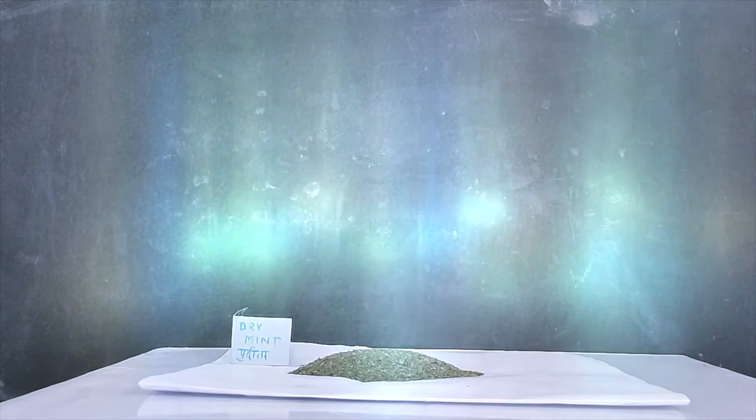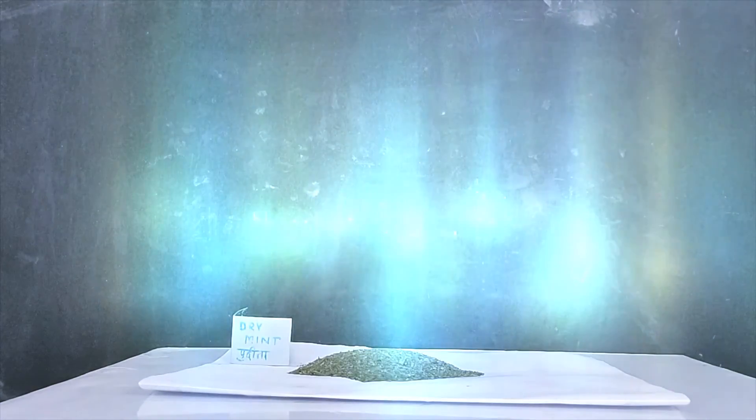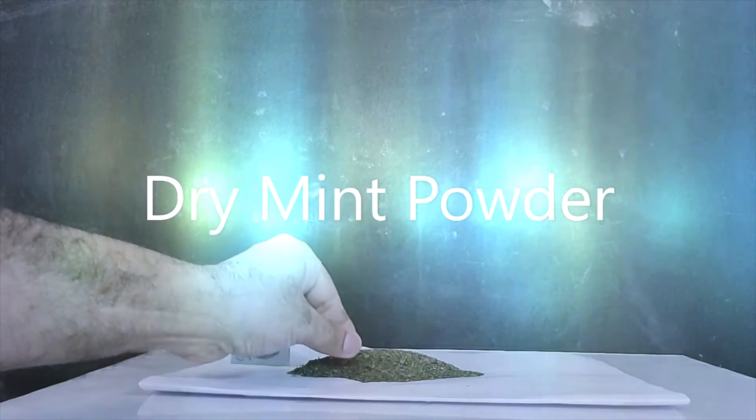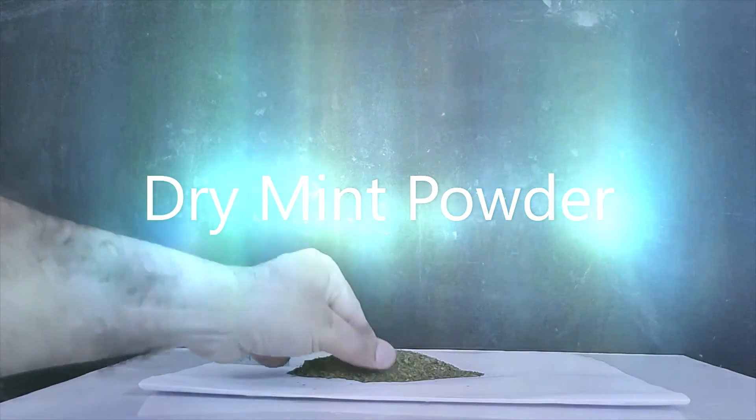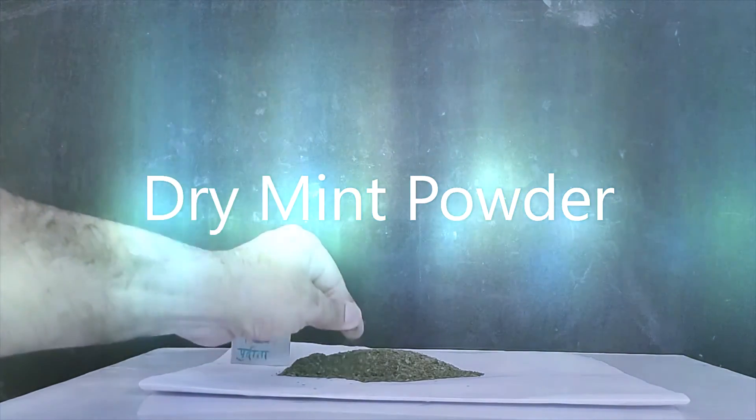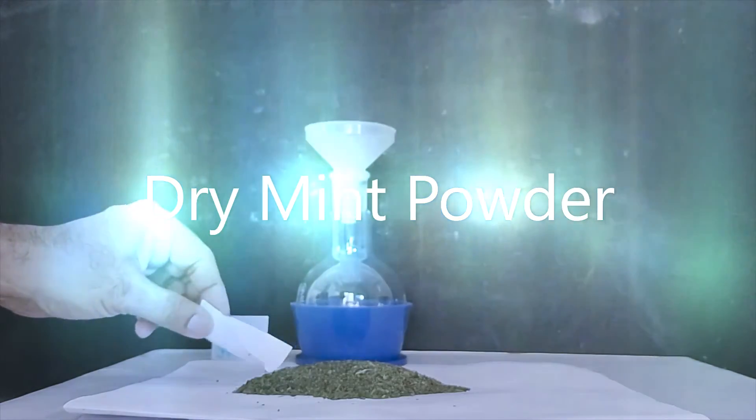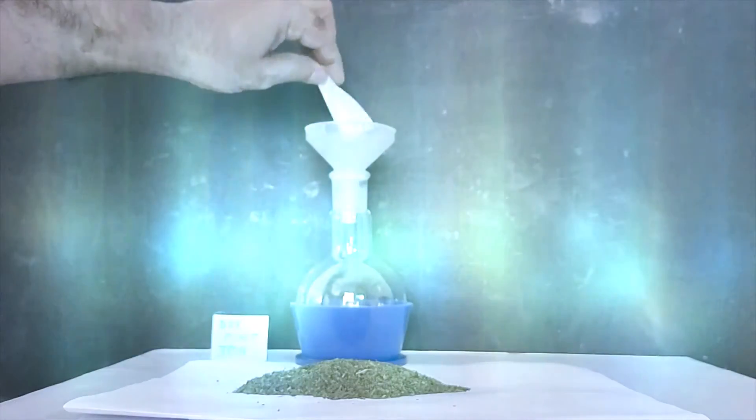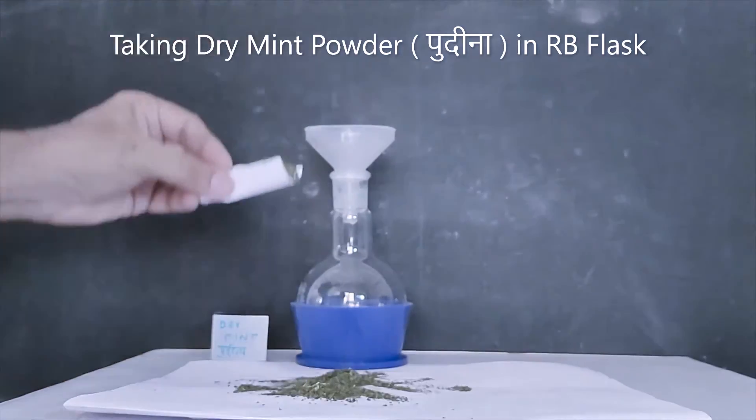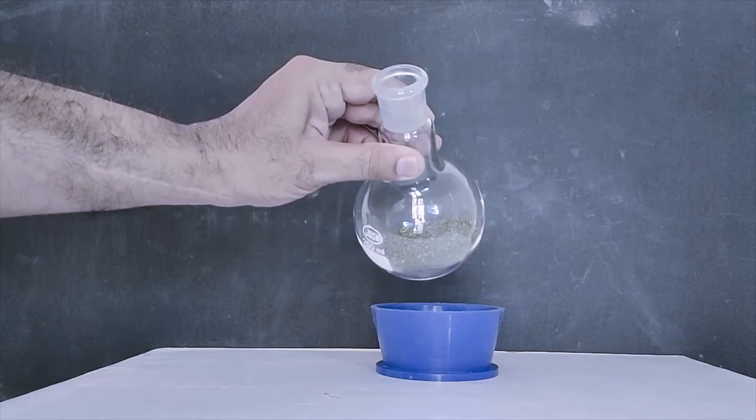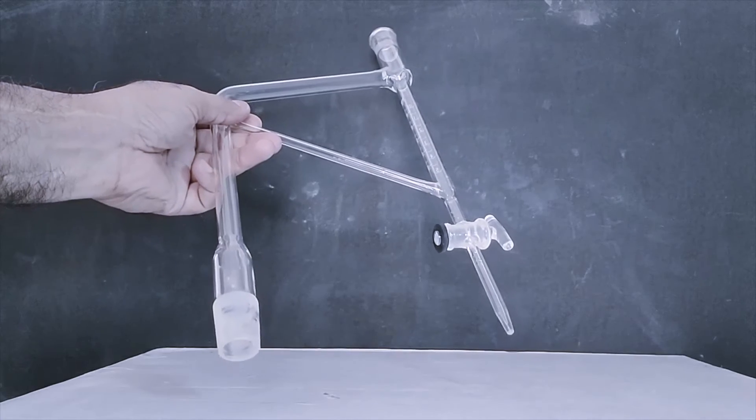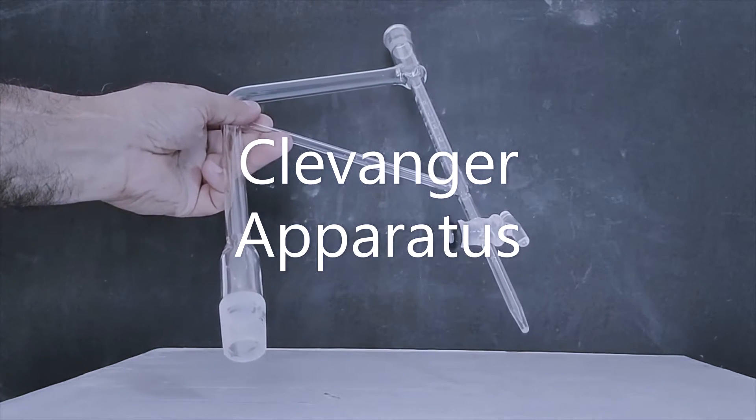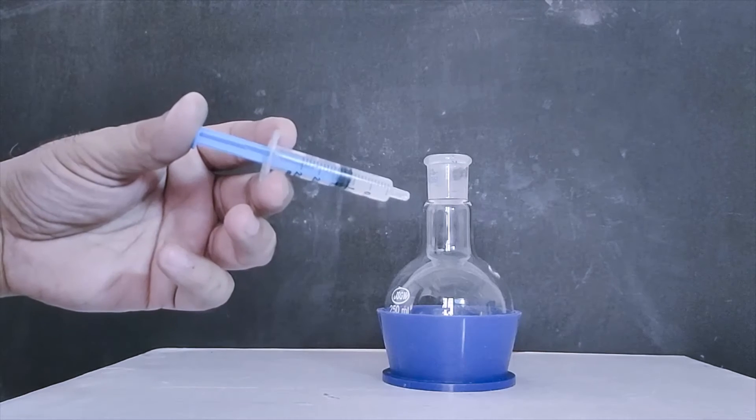Extraction of essential oil using Clevenger apparatus. Dry mint has a good smell. Taking dry mint powder into round bottom flask. Clevenger apparatus used for extraction of essential oil. Vacuum grease.